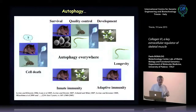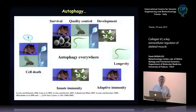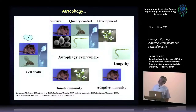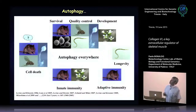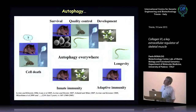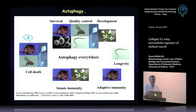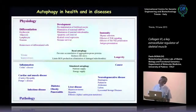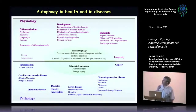Autophagy — the name says 'self-eating' — was considered a kind of self-suicide in the past, but now is known to be a very important homeostatic process for the cell. During development, in adulthood, and during starvation it is able to recover energy and nutrients for the cell. It has been shown to be important in many different physiological and pathological aspects — autophagy is everywhere, now becoming important in different physiological and pathological contexts.